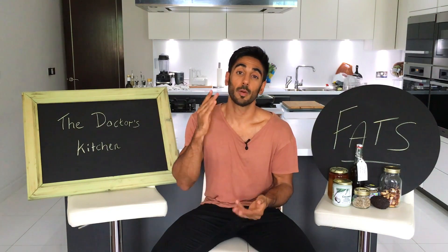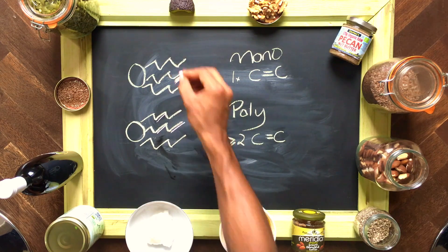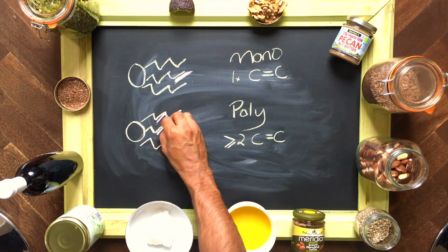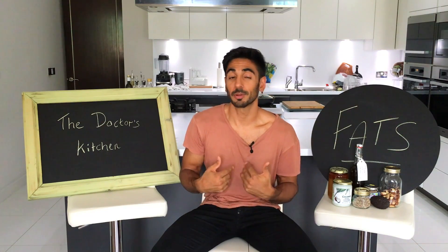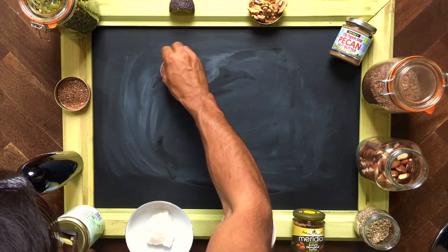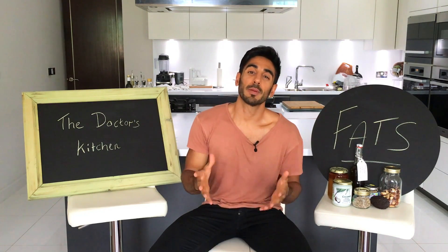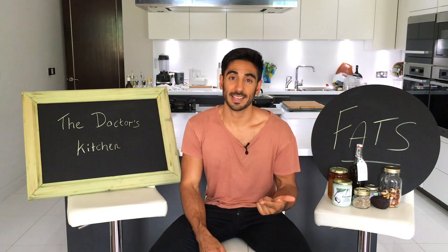Unsaturated fats are those with either one double bond between the carbon atoms — called a monounsaturated fat — or multiple double bonds, called polyunsaturated fats. Monounsaturated fatty acids, or MUFAs, include extra virgin olive oil, olives, nuts, and avocados. We call them MUFAs because they are largely made up of monounsaturated fatty acids. It's always been widely accepted that MUFAs have positive effects on the body — they're better for your cardiovascular system and can have antioxidant roles, containing a lot of vitamin E and other antioxidants.